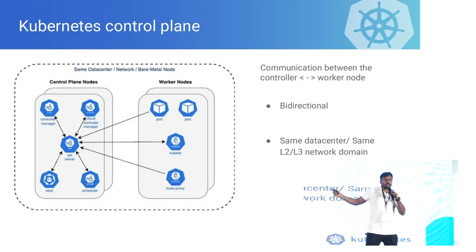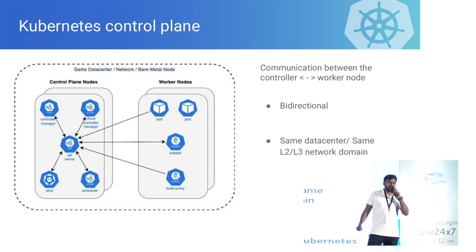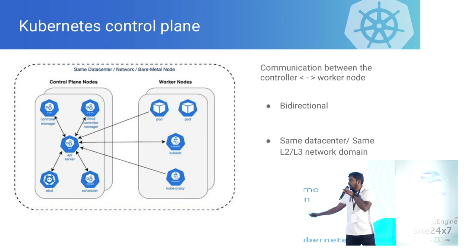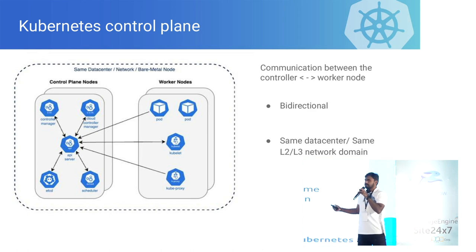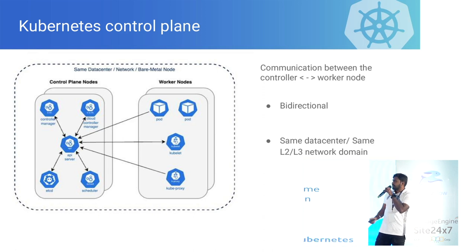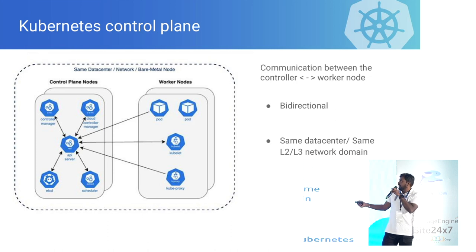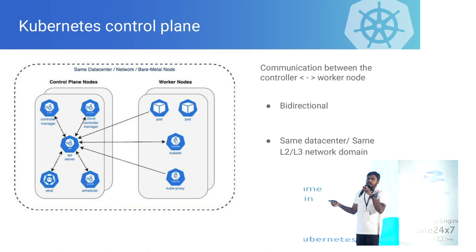I hope everybody knows this slide, either from preparing for CKA or your interviews. Basically, I'm trying to give a brief introduction about how the communication between the control plane and the worker plane works. This will set the tone for the rest of the slides. We first bring up the control plane nodes, then the worker nodes register to the control plane — it's a hub and spoke model.